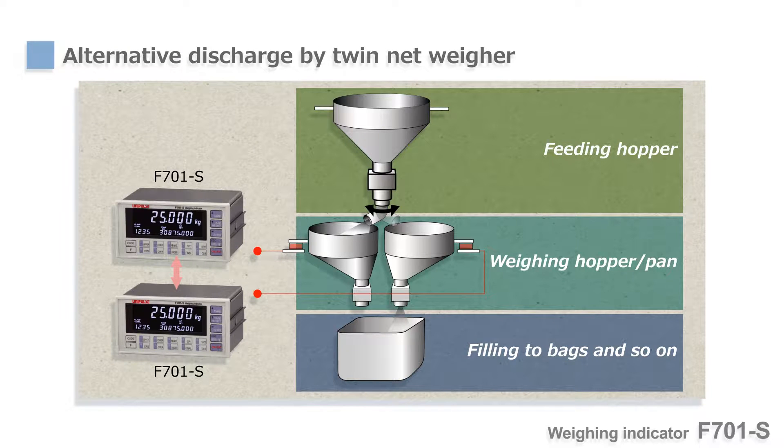Now, we will show you one of the most attractive features of F701S. F701S is also ideal for twin-net-weighing bagging scales. In many cases, a bagging scale has two weighing pans or hoppers to improve accuracy and efficiency.